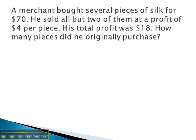For now, let's take a look at another example. A merchant has bought several pieces of silk for $70. The number times the price per item is equal to the total revenue. We don't know the number of pieces, and we don't know the price per item, but we do know the total revenue is $70.